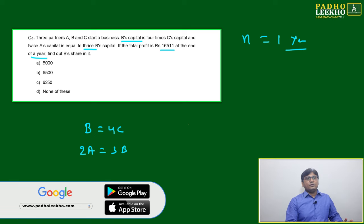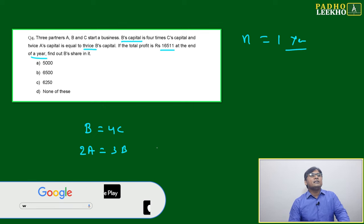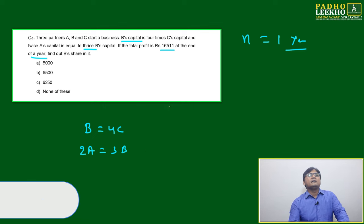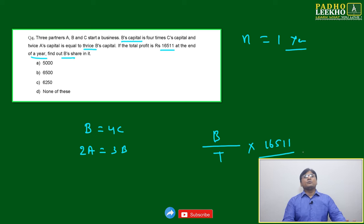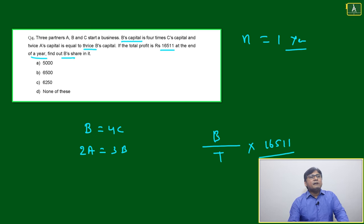We will take the ratio A:B:C, and this total profit we will take in ratio to find B's share. B's share will become B out of total multiplied by 16,511. That's what we have to find. Here, B = 4C.